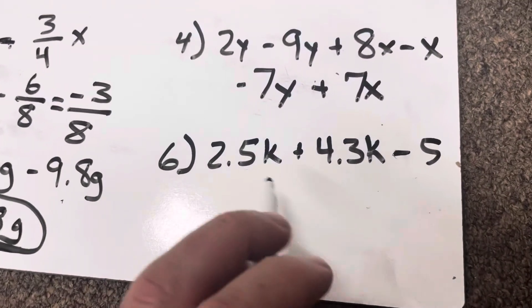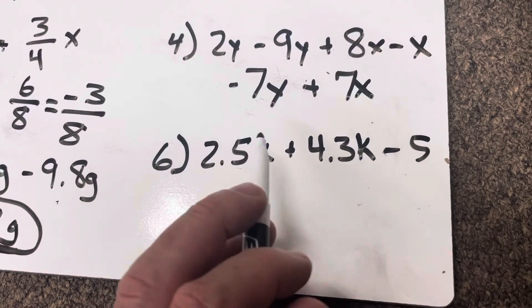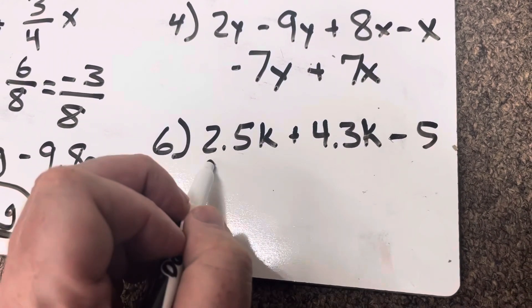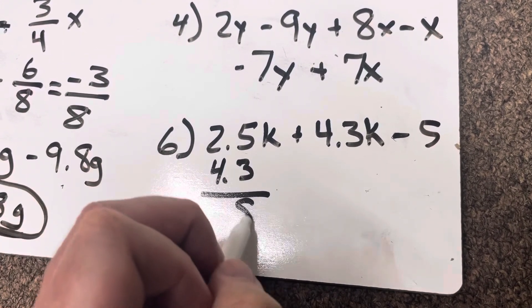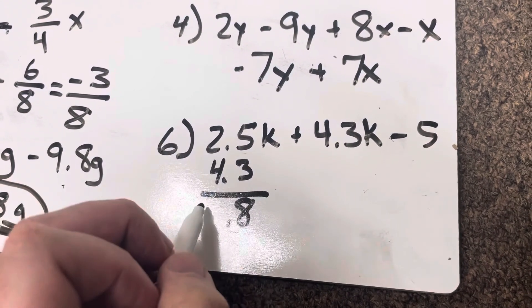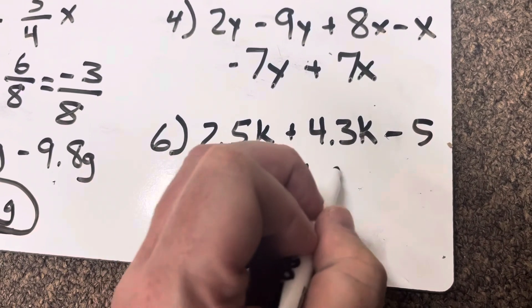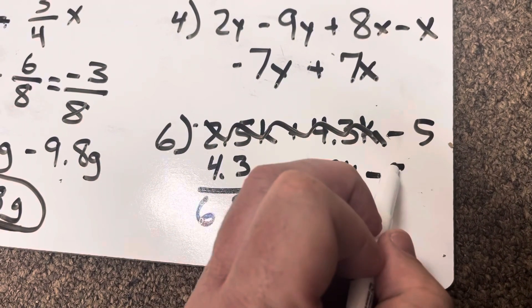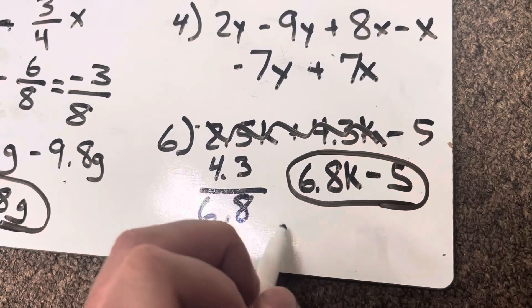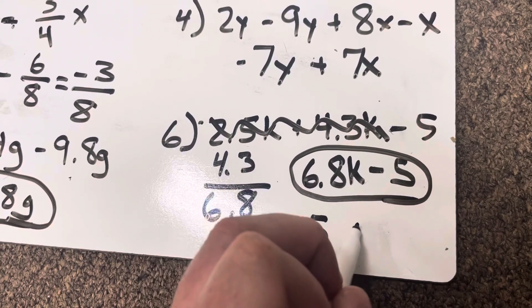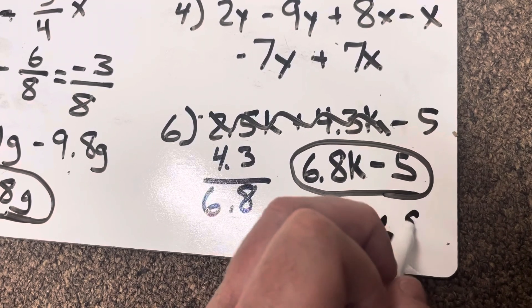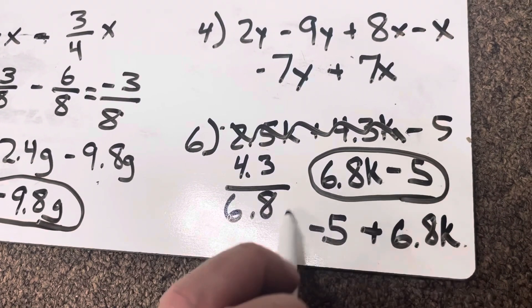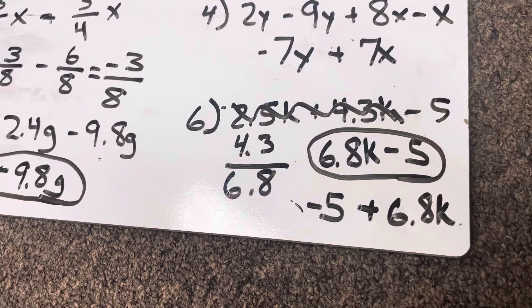Last one. 2.5k plus 4.3k minus 5. My like terms are 2.5k and 4.3k. When I add 2.5 and 4.3, I end up with 6.8k. That combines those two. Then my minus 5 just becomes part of my answer. Now, if I did this and wrote minus 5 plus 6.8k, that would also be okay. Flipping the subtraction by making this number a negative and then adding what's there.